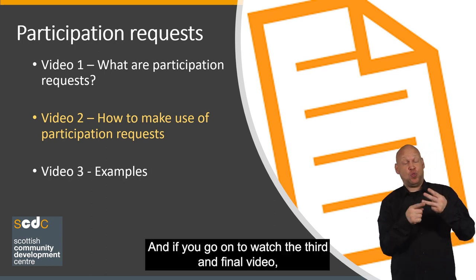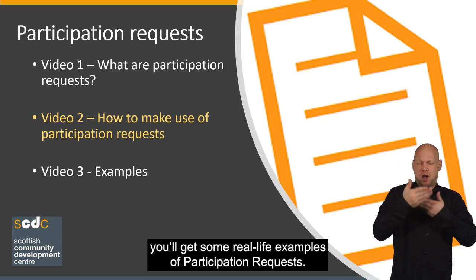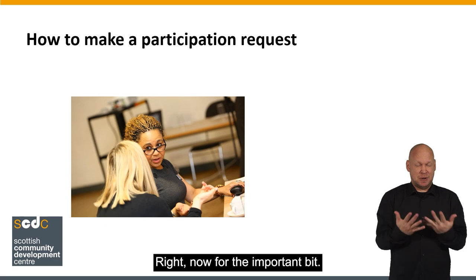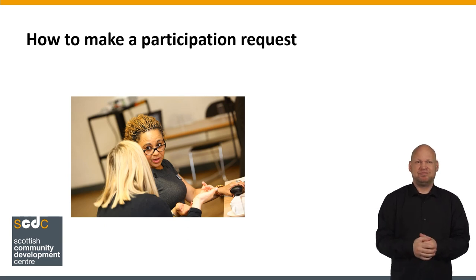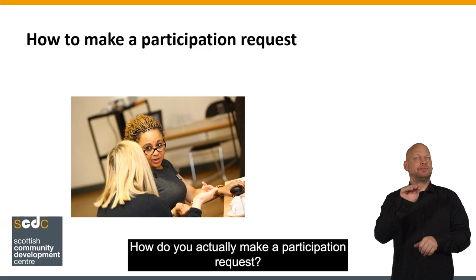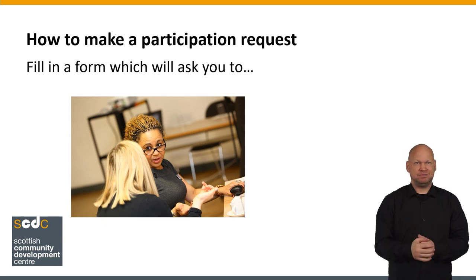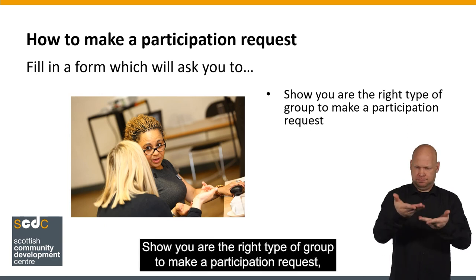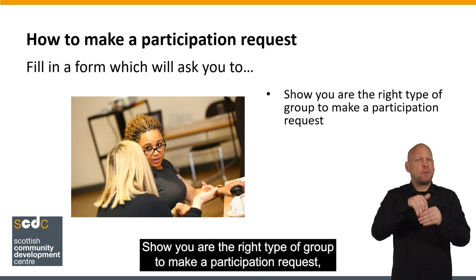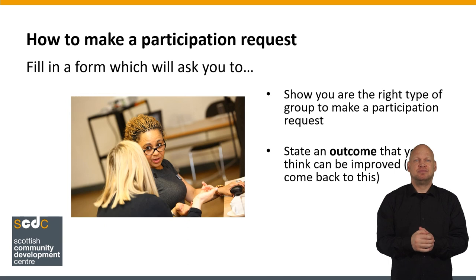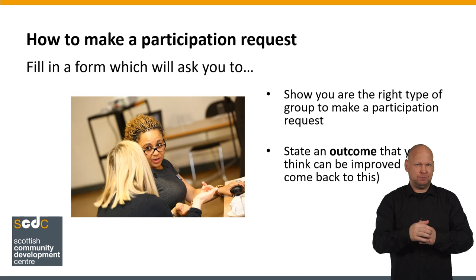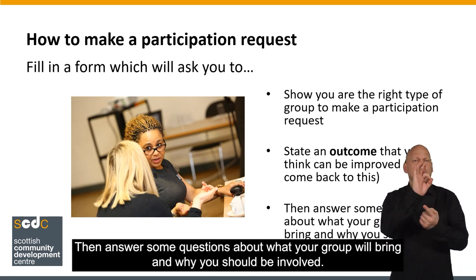And if you go on to watch the third and final video, you'll get some real-life examples of participation requests. Now for the important bit — how do you actually make a participation request? You have to fill in a form which will ask you to show you are the right type of group to make a participation request, state an outcome that you think can be improved — we'll come back to this — then answer some questions about what your group will bring and why you should be involved.